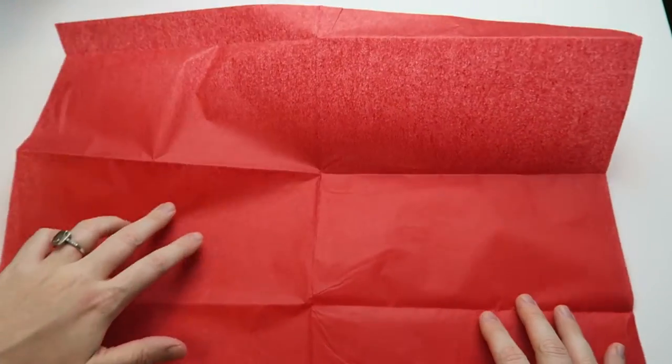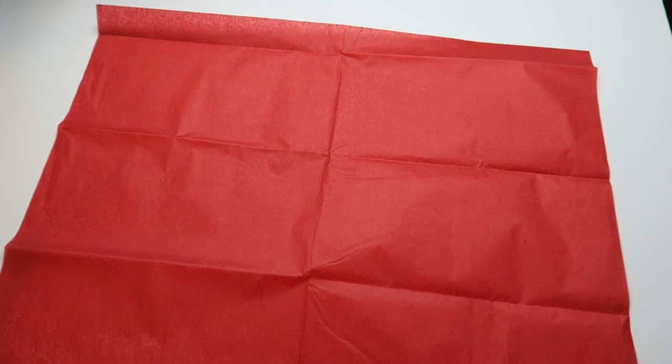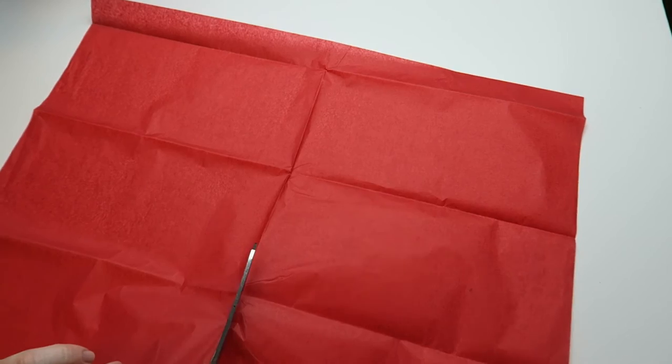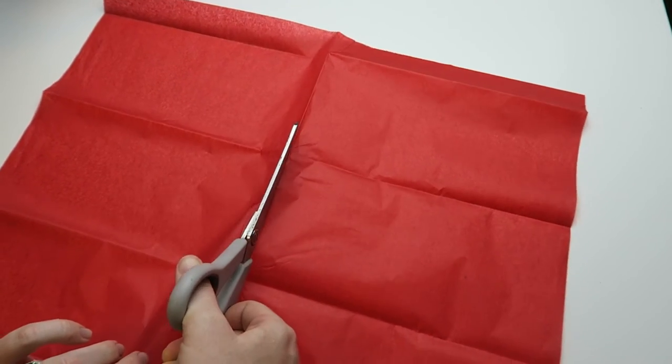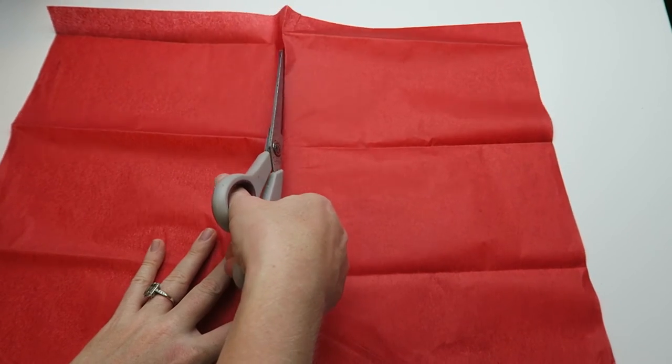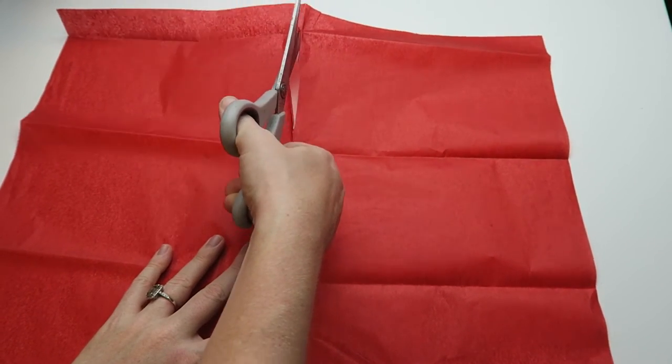As you can see I just fold this piece in half and I cut it in the middle. I think it's going to be easier to use a sharp knife to cut the tissue paper, so I'm going to do that in the next step.